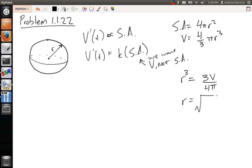So then, we can go back and plug that into our surface area equation. Because right now we have V'(t) is equal to k times 4πr². Well, notice we have an r here and an r here. We can just plug in, and then we have an equation in terms of V.